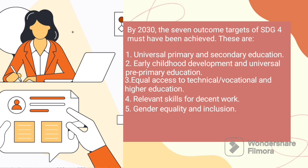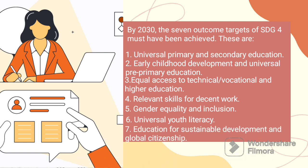Number six is universal youth literacy. This ensures that all youth and a substantial proportion of adults, both men and women, achieve literacy and numeracy. Number seven, and the last, is education for sustainable development and global citizenship. This ensures all learners acquire knowledge and skills needed to promote sustainable development, including through education for sustainable lifestyles, human rights, gender equality, a culture of peace and non-violence, global citizenship, and appreciation of cultural diversity and cultures' contribution to sustainable development.